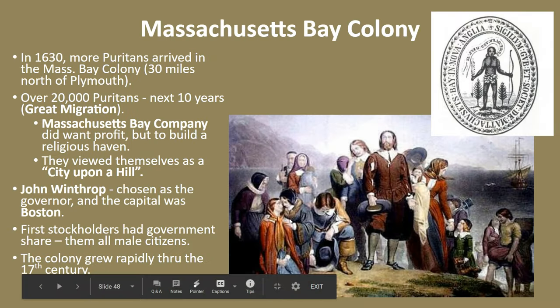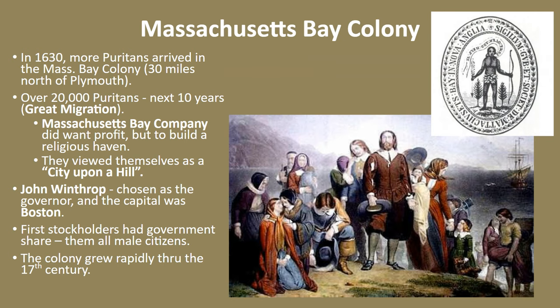The Massachusetts Bay Colony was a group of non-Separatist Puritans who actually received permission to settle in New England. This is 10 years later, in 1630, located 30 miles north of Plymouth. Over the next decade, 20,000 Puritans immigrated — what historians call the Great Migration — a significant movement of Puritans leaving England and migrating to Massachusetts Bay Colony.